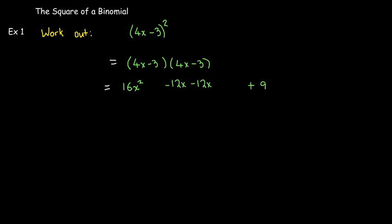So I get 16x squared, then minus 12x, minus 12x again, and then positive 9. And what's the pattern we can see? Well, the 16x squared is the square of the first term, 4x.